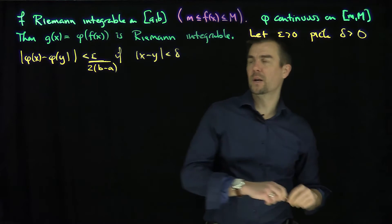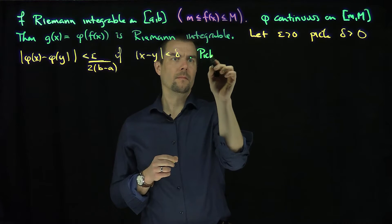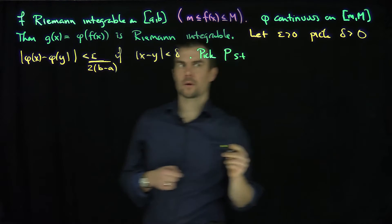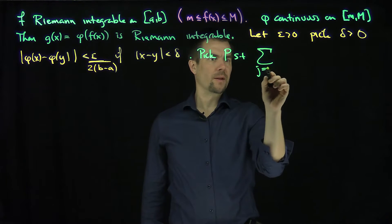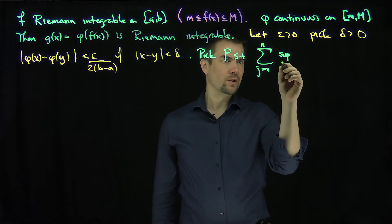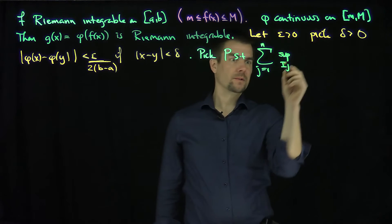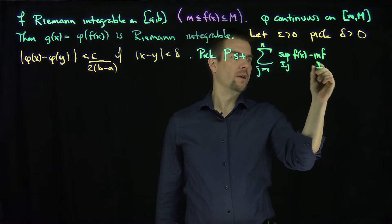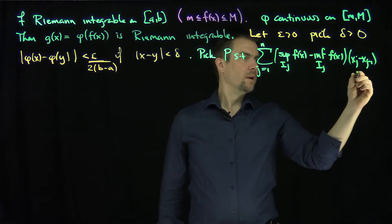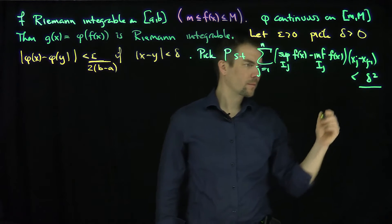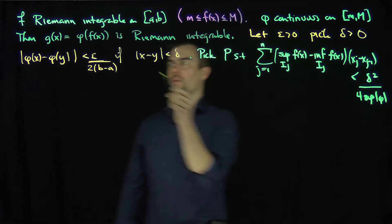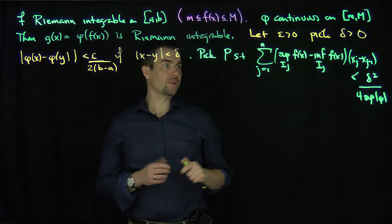Then we're going to pick a partition P such that the sum from j=1 to n of the supremum of f over interval I_j minus the infimum of f over I_j, times (x_j - x_{j-1}), is less than delta squared over 4 times the supremum of |phi|. We can always ensure this because f is integrable.